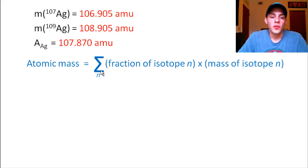And the summation, the terms that you add together are the fractions of the isotopes multiplied by their respective masses.